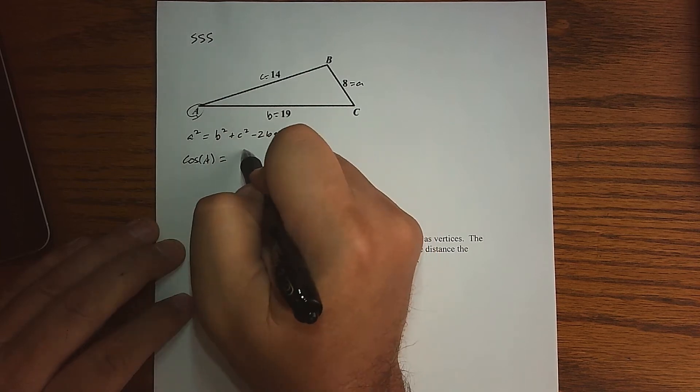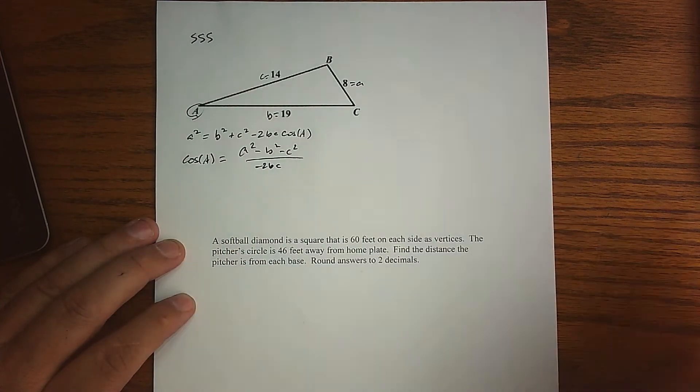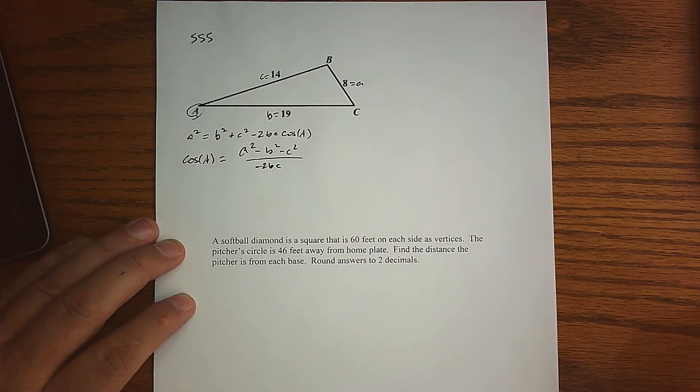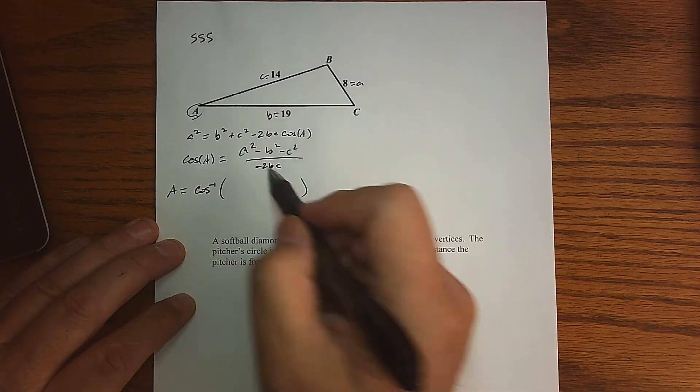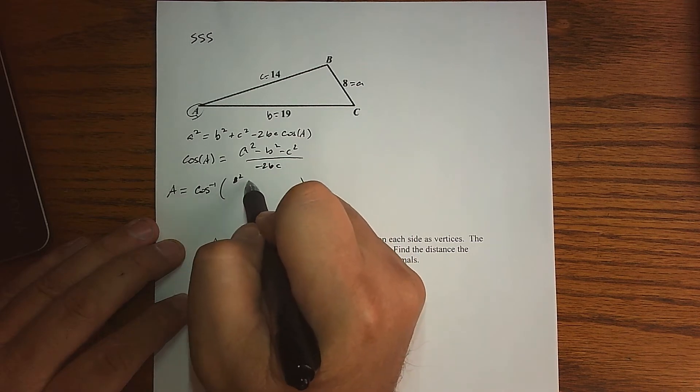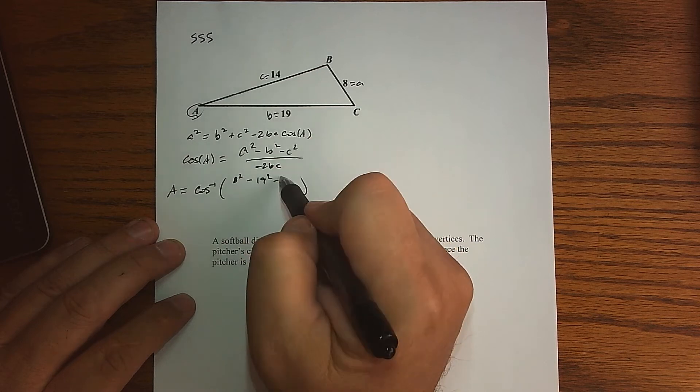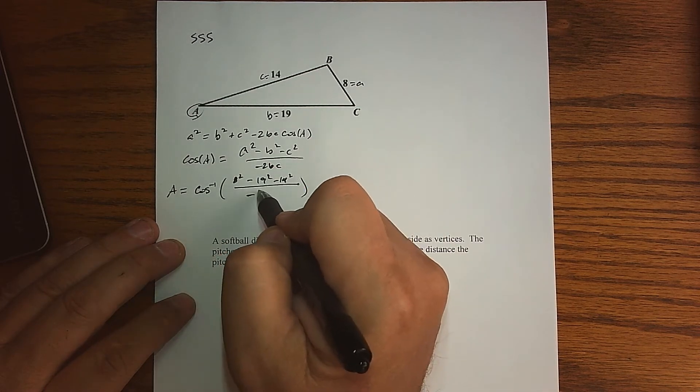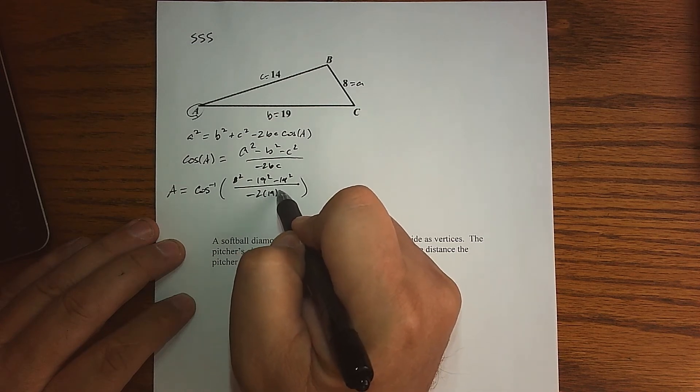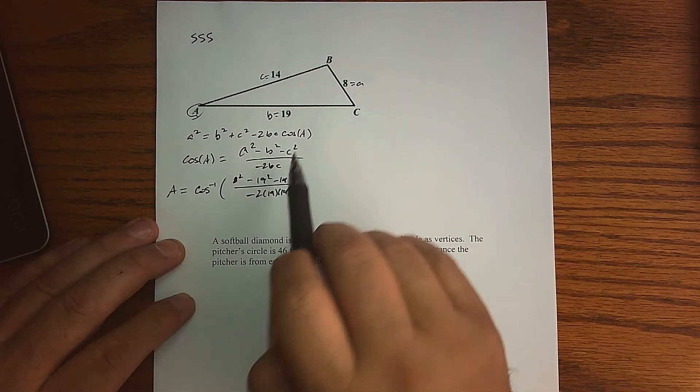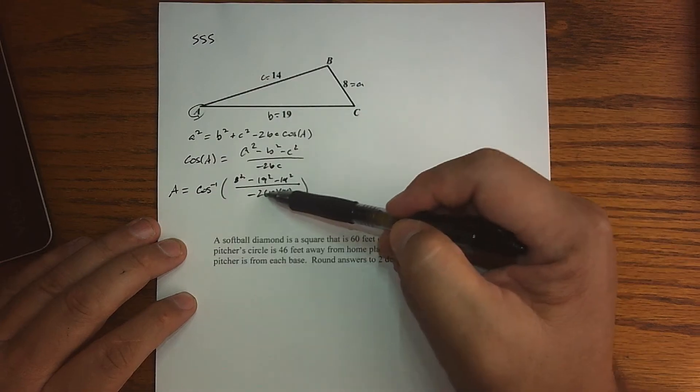But the cosine of A is essentially A squared minus B squared minus C squared, all divided by 2BC. And so my A is going to be the inverse cosine of all this information. So side A is 8 squared, B is 19 squared, and C is 14 squared minus 2 times B, which is 19, and C, which is 14. So let's make sure I just substitute everything right. So A, B, C minus 2BC, right?